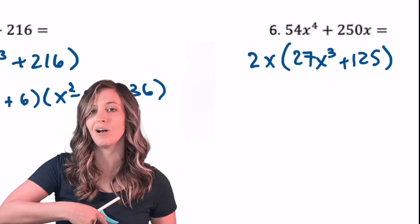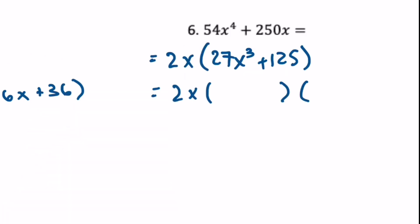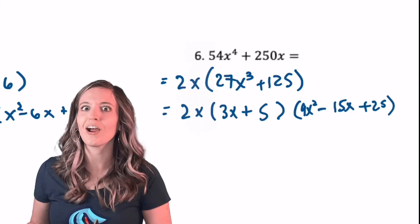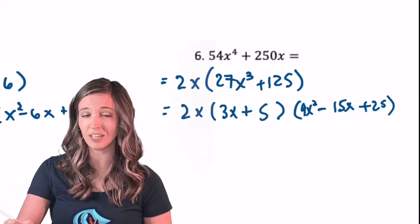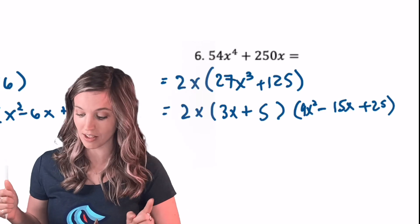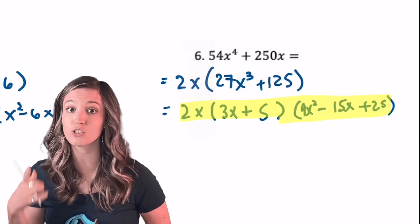So take a minute, try to factor what's left. All right, check your factored form, make sure you didn't drop that 2x, and really check your trinomial. Do you have 9x squared minus 15x plus 25?